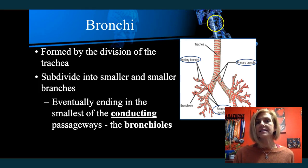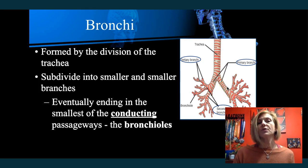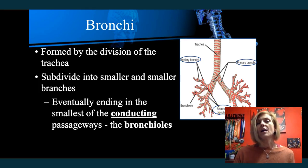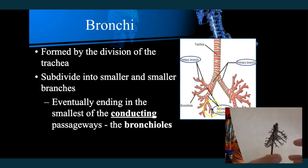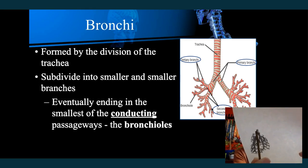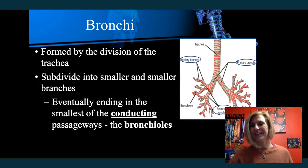Next, we have the bronchi, which descend inferiorly from the trachea. The trachea branches into two — right and left — primary bronchi. From there, the primary bronchi branch again into secondary bronchi, and again into tertiary bronchi, kind of like a family tree. This is all part of the conducting zone. They continue to branch into respiratory bronchioles at the very bottom level. Looking at a rat's lung, you can clearly see the two primary bronchi branching from the central line, with smaller and smaller branches forming the bronchioles.